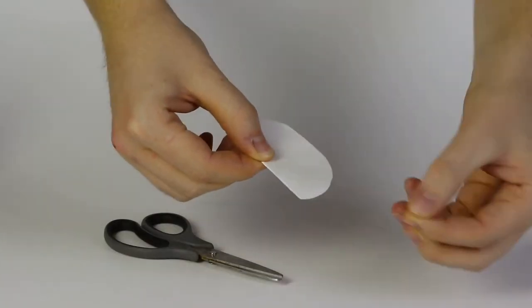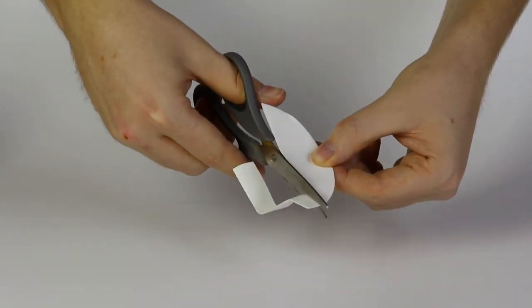Cut a piece of filter paper as shown. Fold it in half and hold it with the tweezers.